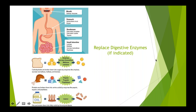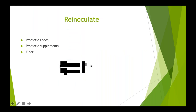The third R is to Re-inoculate — give back or increase the amount of good bacteria in your gut. By increasing good bacteria, you're simultaneously decreasing bad bacteria — a two-for-one benefit. There are three main ways to do this: probiotic foods, probiotic supplements, and fiber.